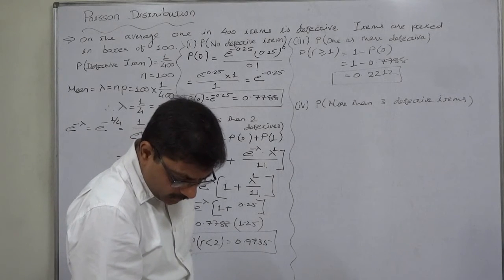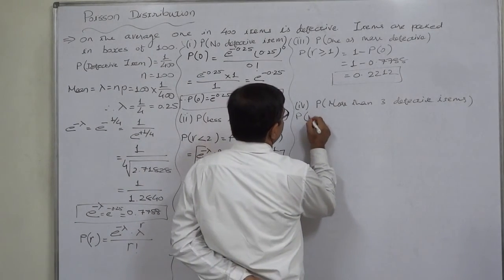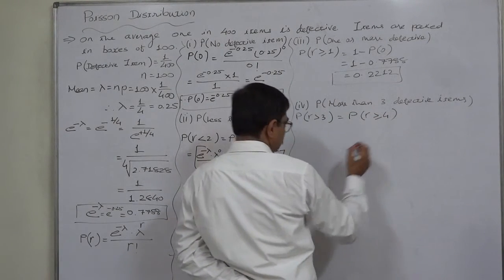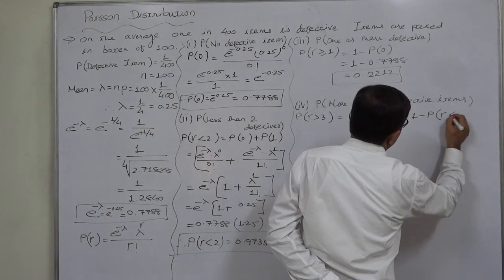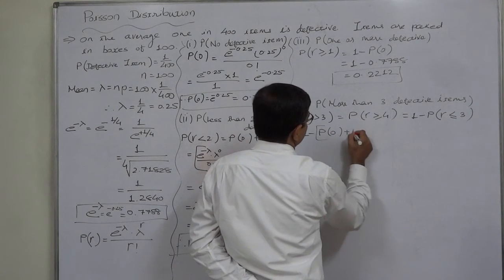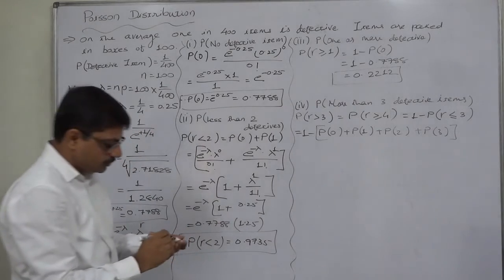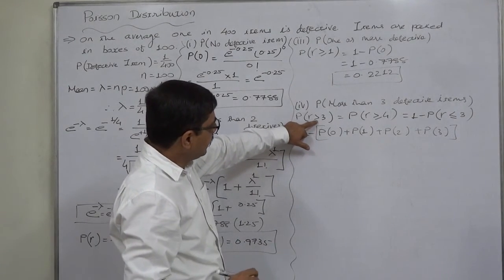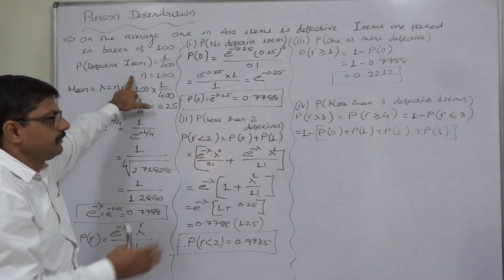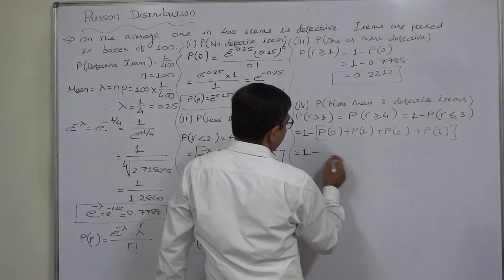The fourth question is the probability of more than 3 defectives — P(R > 3), which equals P(R ≥ 4). The easiest approach is 1 minus [P(0) + P(1) + P(2) + P(3)]. Otherwise, we would need to calculate probabilities for every value of R from 4 to 100, which is not feasible. So we use the complement rule.